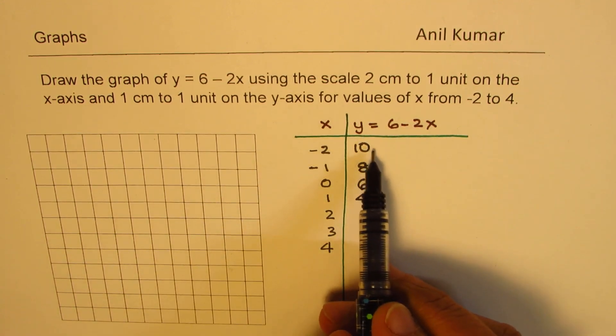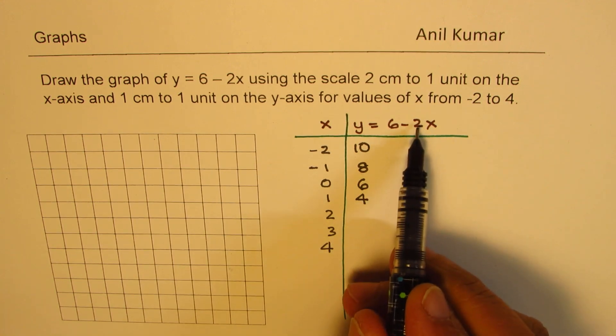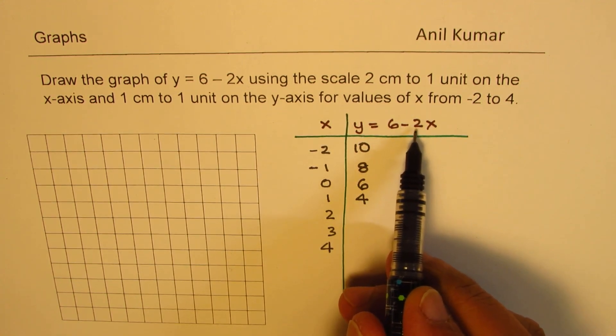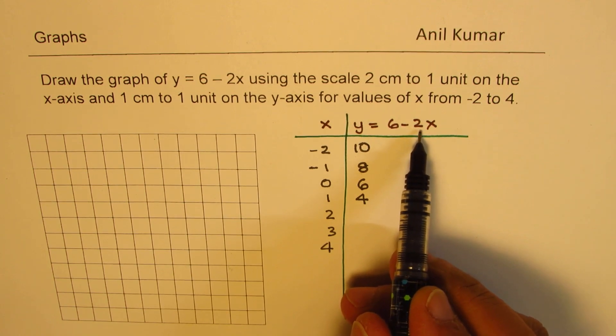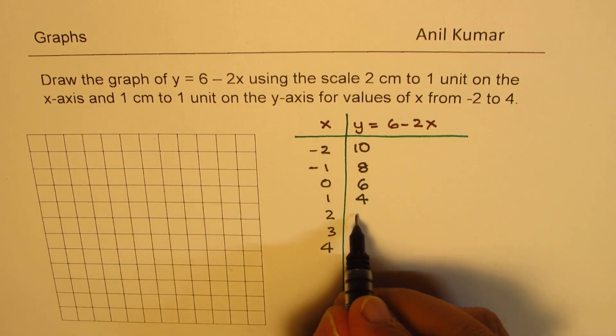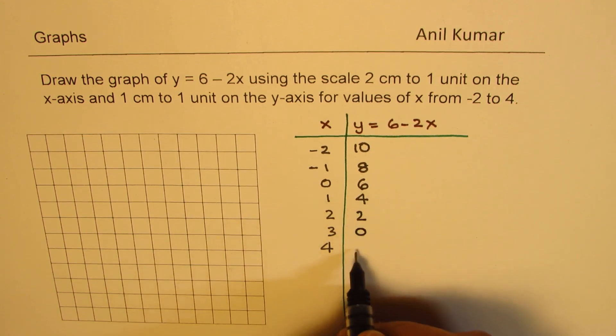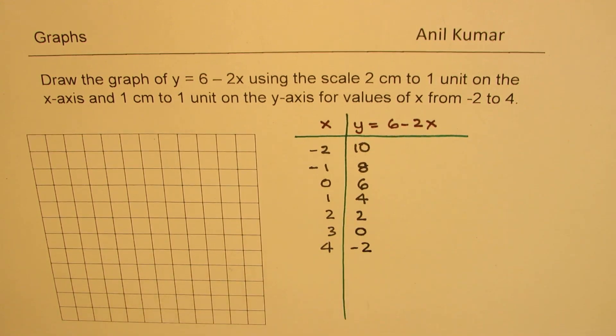You also notice we are going down by 2 units, 6 minus 2x. So that minus gives you the rate of change or the slope. So we have to go down by 2 units. So we can just keep on going and we'll get these values when calculated.